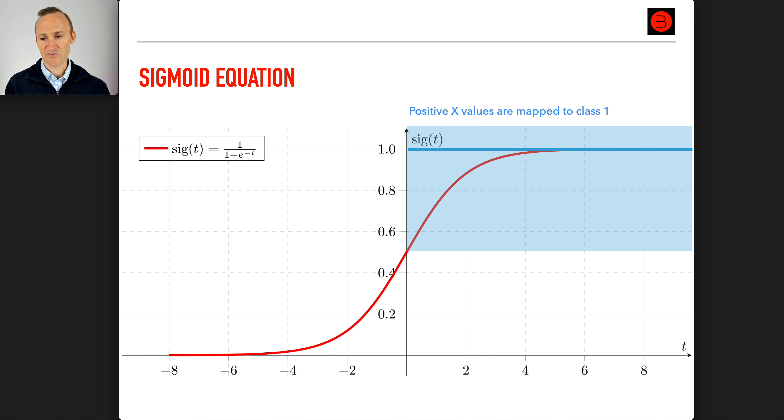The positive x values are mapped to class one. The idea here is that everything to the right of zero, everything in the red curve, maps straight up to one.